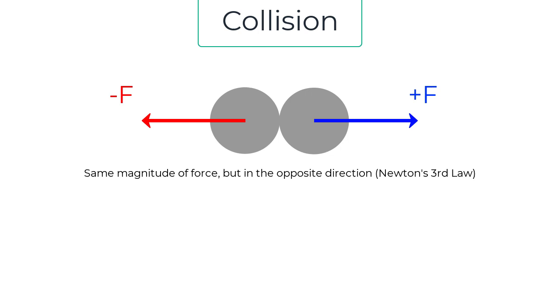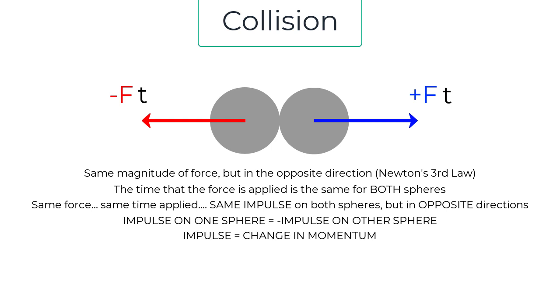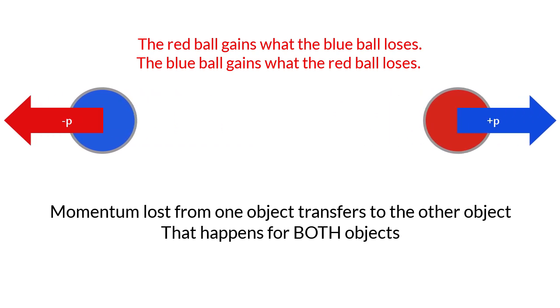Going back to the colliding spheres: during the collision both spheres apply an equal force on each other in opposite directions — Newton's third law. Since both spheres experience these forces over the same amount of time, they experience equal impulses in opposite directions. Since impulse equals change in momentum, both spheres experience equal changes in momentum in opposite directions. Those two changes cancel each other out, so total momentum before and after the collision is equal. The momentum lost by one object is gained by the other.